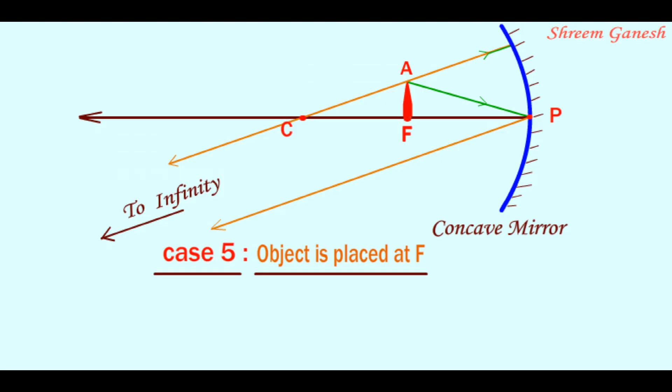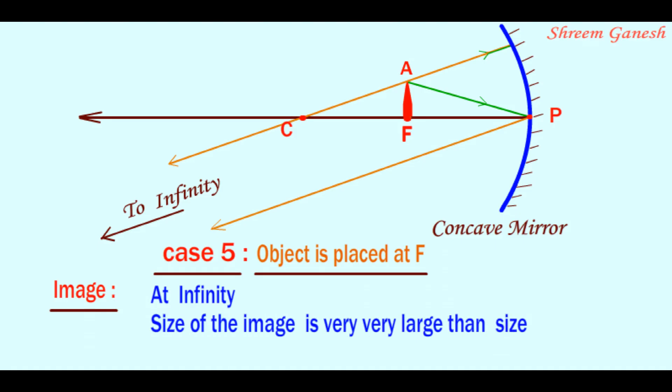So, we can conclude that when an object is placed at principal focus of a concave mirror, the image is formed at infinity. Size of the image is very very large than size of the object and the image is real and inverted.